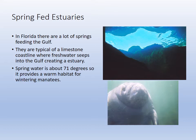The first type of estuaries we look at are the spring-fed estuaries. Florida has that karst topography — the limestone. Limestone gets dissolved by slightly acidic water, and we have an extensive aquifer where the limestone dips below the water table. The aquifer flows out giving us springs. Those springs feed into the Gulf or Tampa Bay, creating spring-fed estuaries. They maintain a consistent temperature, so manatees love them in winter when Gulf temperatures drop below 70 degrees.